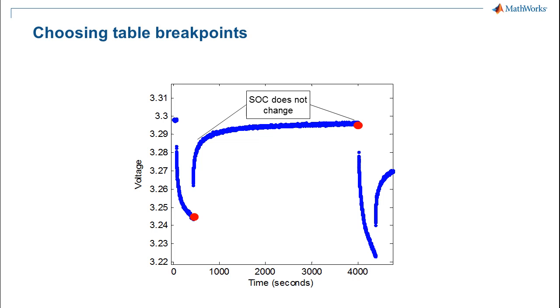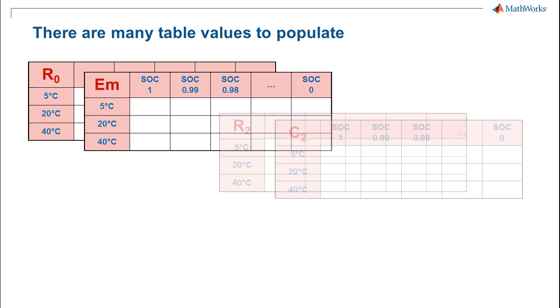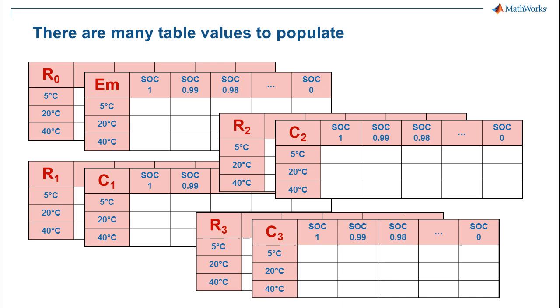For the parameter values versus state of charge, choosing the table breakpoints is an interesting topic. First, we found that it's very important to place the SOC breakpoints exactly at the pulse edges in the datasets. Even slight differences in the SOC values used for the breakpoints could cause them to not line up well with the data. If the breakpoints are exactly at the pulse edges, then the table values are assured to only affect the portions of the simulated data that you expect. However, when you look at all the parameters, there are many table values to populate. We found there are far too many to perform the estimation all at once.